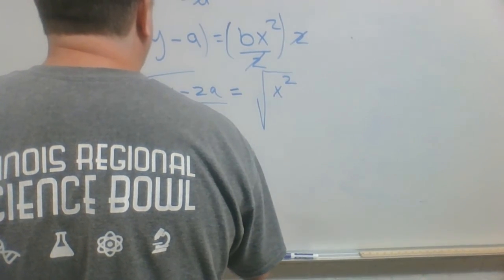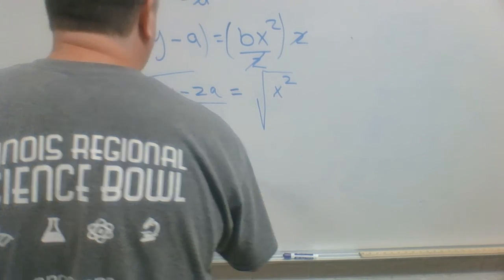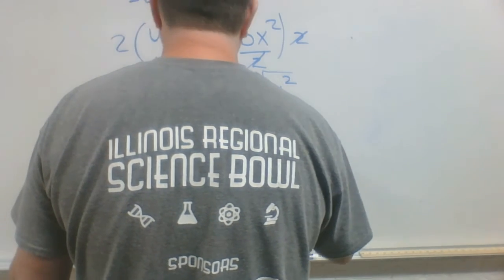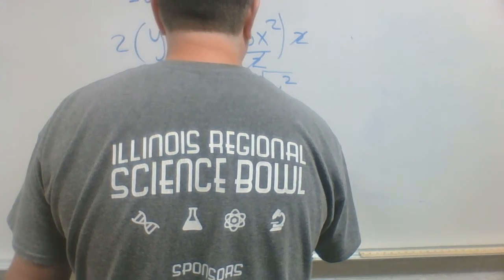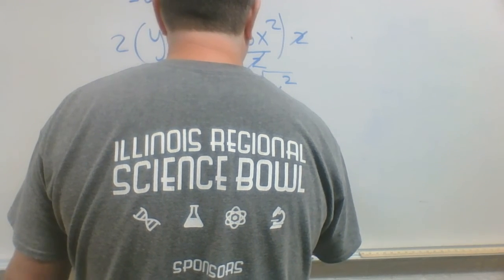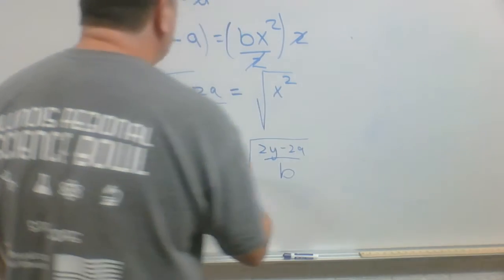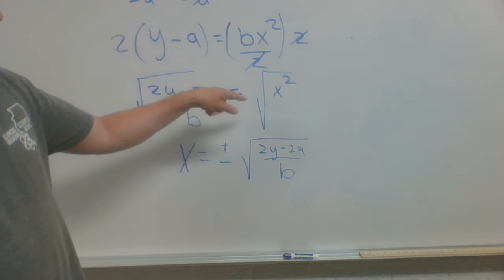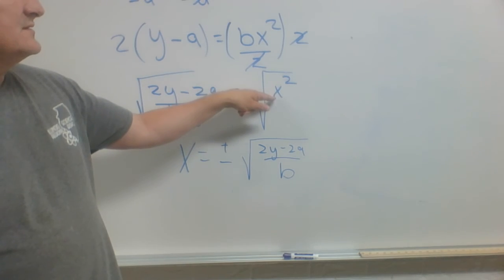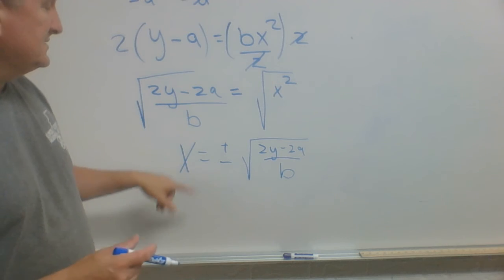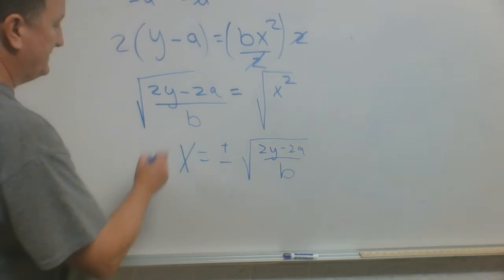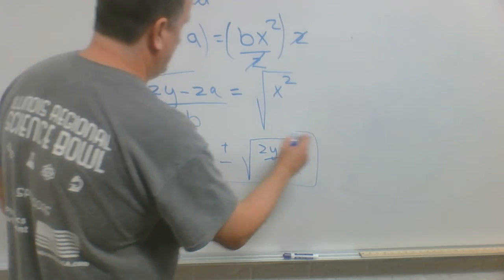is equal to plus or minus square root of 2y minus 2a over b. The plus or minus is because when I take the square root of a square, it could be either plus or minus. So I end up with this term here.